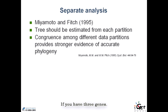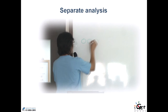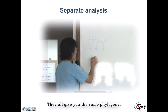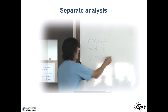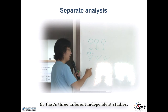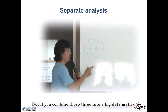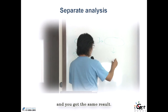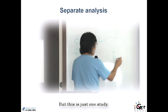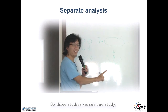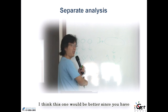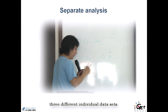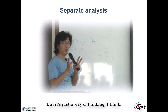If you have three genes and you get three results, it's like three different samplings, and they all give you the same phylogeny. That represents three different independent studies. But if you combine those three things into a big data matrix and get the same result, that is just one study. So three studies versus one study — three individual datasets gives stronger support. But it's just a way of thinking.